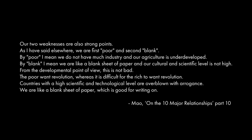In the last section of his speech on the ten major relationships, Mao described the Chinese nation as follows: 'We are first poor and second blank. By poor, I mean we do not have much industry and our agriculture is underdeveloped. By blank, I mean that we are like a blank sheet of paper and our cultural and scientific level is not high. From a developmental point of view, this is not bad. The poor want revolution, whereas it is difficult for the rich to want revolution. We are like a blank sheet of paper, which is good for writing on.' China was so backwards and so underdeveloped that anything could and should be tried to pull up to the level of a modern industrial nation. Unfortunately, as we'll see in later episodes, something drastically outrageous was tried, and the cost was very high indeed.